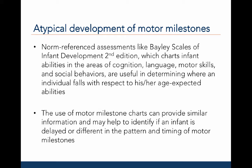We may also use motor milestone charts to determine an infant's successful acquisition of motor milestones as a marker for typical and atypical development. This can help us determine if an infant is delayed or different in the pattern and timing of these motor milestones. Since movement is critical for an individual to interact with his or her environment, delays in motor milestones can cause delays in cognitive, social, and brain development.